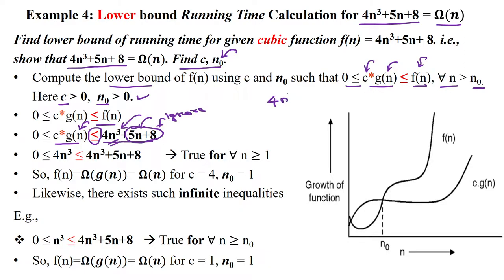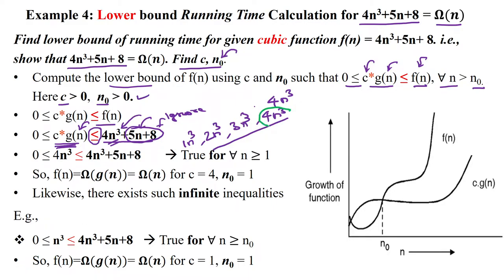For 4n³, the equivalent term is 4n³ and smaller terms are 3n³, 2n³, and 1n³. We can substitute these values for c·g(n). Initially considering the equivalent term 4n³, based on this condition: 4n³ ≤ 4n³ + 5n + 8. We take this term as c·g(n) for the other function.